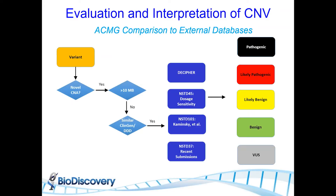The databases we assess include Decipher, which contains a number of known syndromes, and ClinGen, which has three different databases: a dosage sensitivity database, the fixed published postnatal dataset, and the recent submission dataset, where new information can be added on a daily basis. Each database is further broken down by type of change — gains or losses — and the classification of those changes: pathogenic, likely pathogenic, likely benign, benign, or unknown significance. Using all these databases with a high level of similarity, we can classify changes that have been previously reported and maintain that reporting.